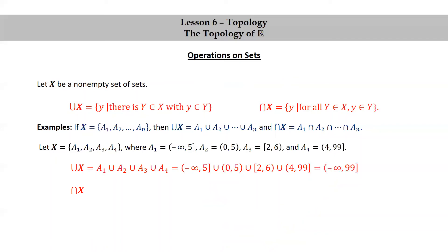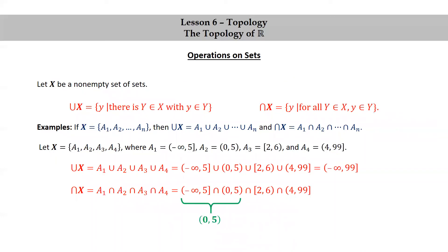Let's also take the intersection of these four intervals, going from left to right. The intersection of negative infinity to 5 and 0 to 5 is 0 to 5, because 0 to 5 is a subset of negative infinity to 5. Then the intersection of 0 to 5 with 2 to 6 is the half-open interval from 2 to 5, including 2 but not including 5. And finally, when we take the intersection of this half-open interval 2 to 5 and the half-open interval 4 to 99, we get the open interval from 4 to 5.